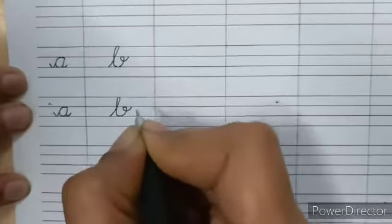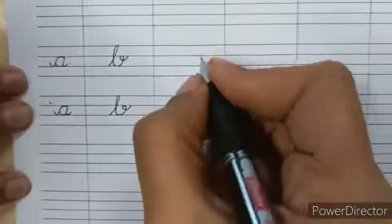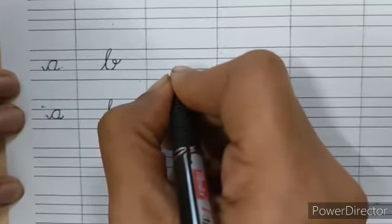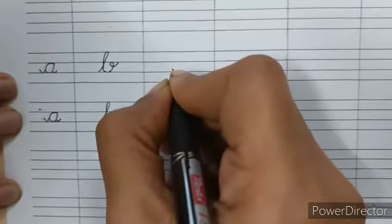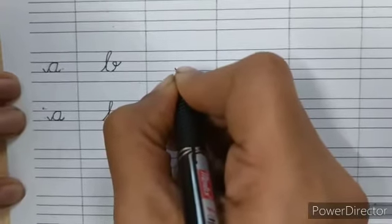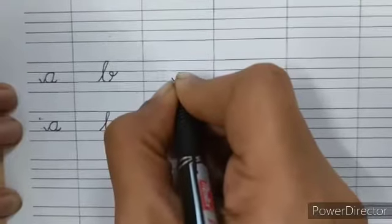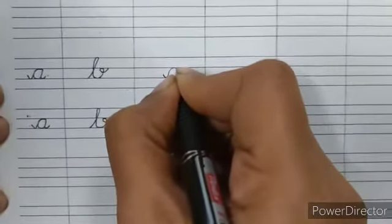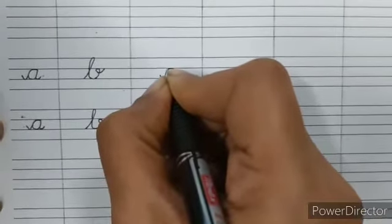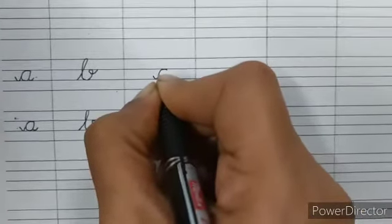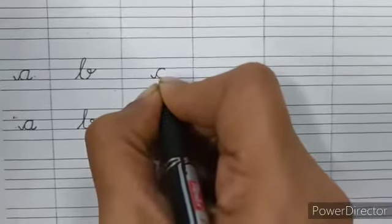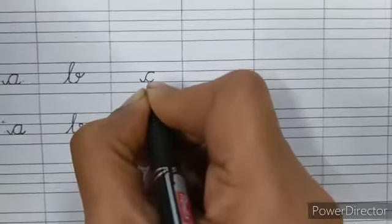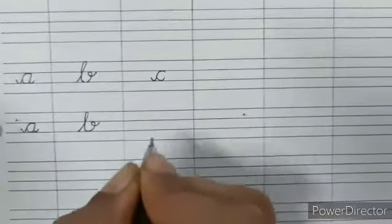Next letter is C. It starts with a small curve that touches the second line. Then you come on the same line and continue downwards, bringing it to the third line. And a small extension which becomes the connecting curve. This is C.